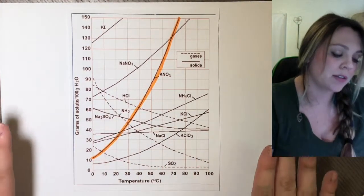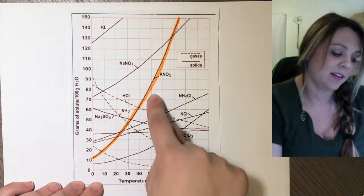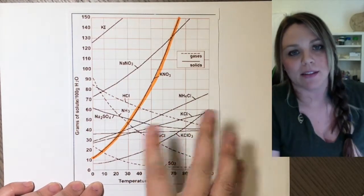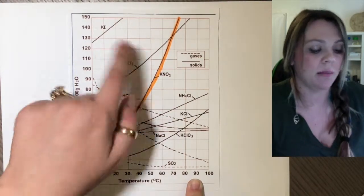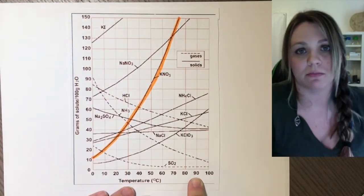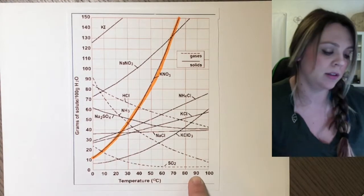You're just looking at a graph, identifying X and Y axes, and finding the correct compound that is going to be soluble in water. That's it.